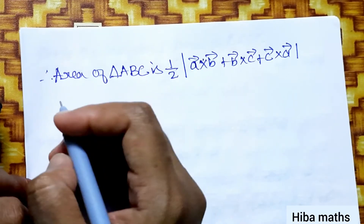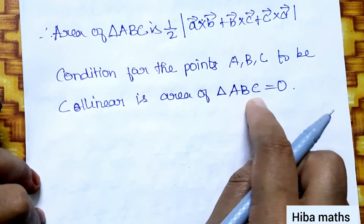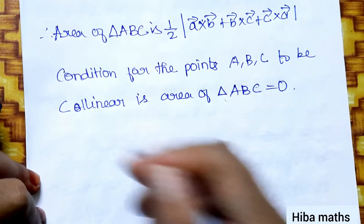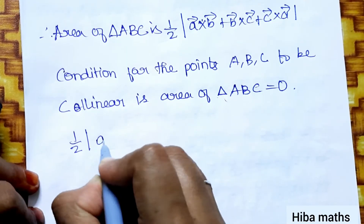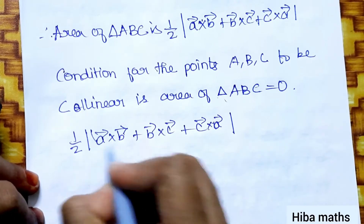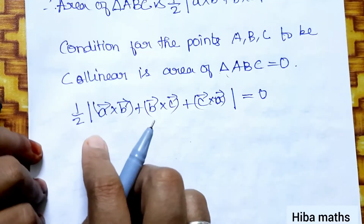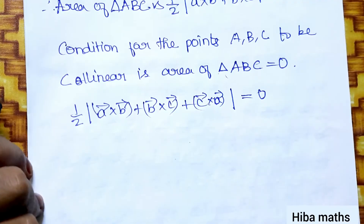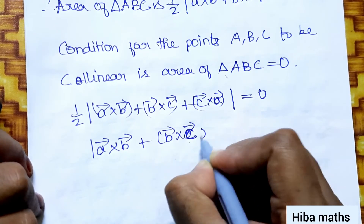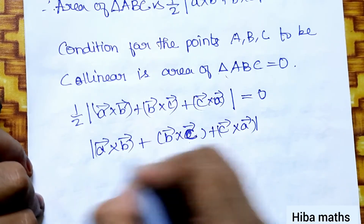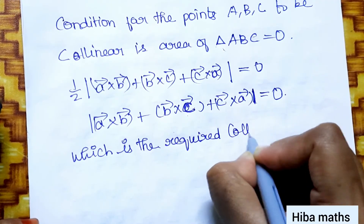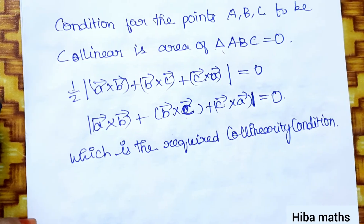Now for the second part, the condition for points A, B, C to be collinear is that the area of triangle ABC equals zero. This means 1/2 |A×B + B×C + C×A| = 0, which gives A×B + B×C + C×A = 0. This is the required collinearity condition. Thank you so much for watching.